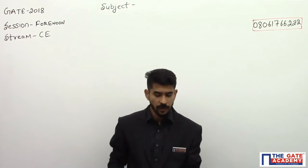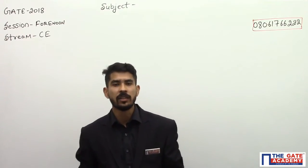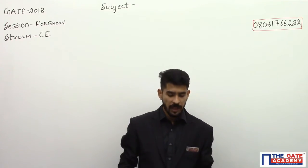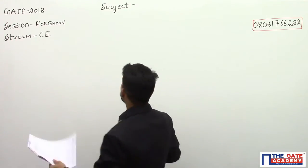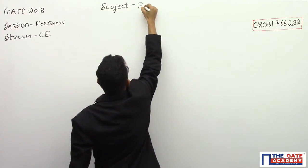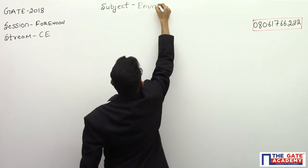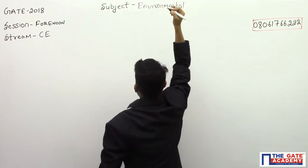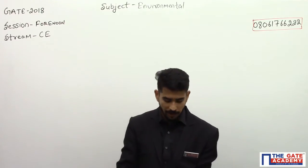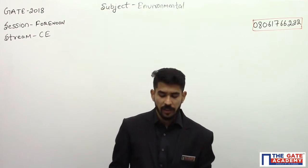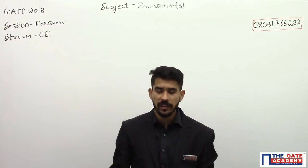Let us discuss a question asked in GATE 2018 in the civil examination forenoon paper. The question is from environmental engineering and says a waste activated sludge is to be blended with green waste.